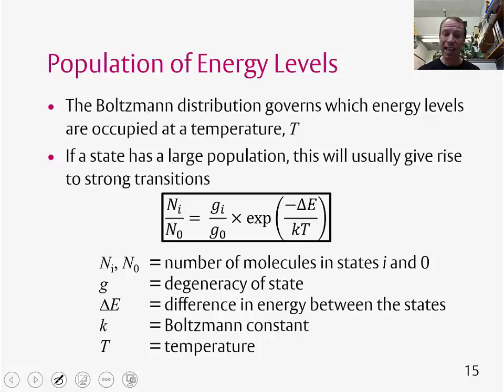Then we also have K, the Boltzmann constant, and the temperature T. We need to think carefully about units in this expression. So the difference in energy between the states is typically written in joules, and the temperature is in Kelvin. So as always when you're doing calculations, if you put SI units in, you'll get SI units out.